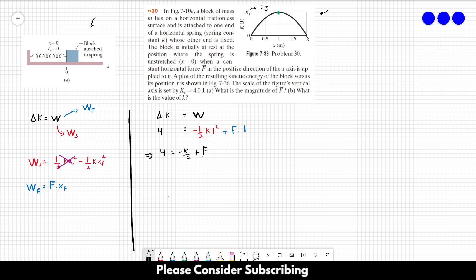And we can have another equation by getting the information at this point over here. So at this final point over there, we have that the kinetic energy is 0, and we have that the final position is 2, plus F times 2. So this gives us 0 equal to minus 2k plus 2F.